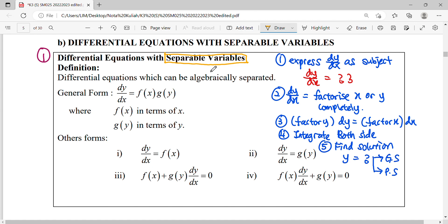So how do we know that equation is suitable for separable variable? You have to express your dy/dx as a subject like this. Let your dy/dx as a subject at the left-hand side. Then every unknown here, you move to the right-hand side. Then you observe your unknown.